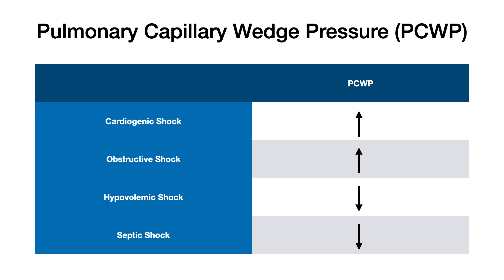Pulmonary capillary wedge pressure changes depending on different types of shock. If you see an elevated pulmonary capillary wedge pressure, you want to think cardiogenic or obstructive shock. Pulmonary capillary wedge pressure that's elevated with critically low blood pressure is telling you that the patient has cardiogenic shock — that's something very important to know.